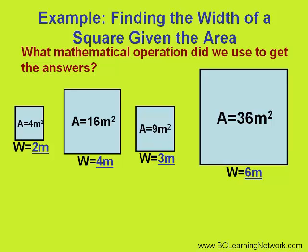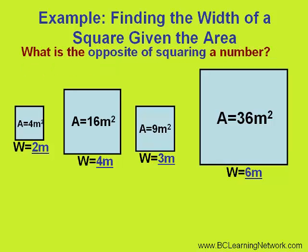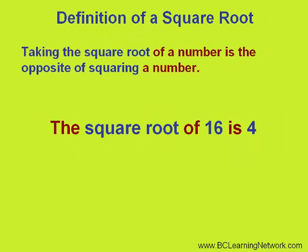What did we do to 16 to come up with the answer of 4? Or, what did we do with 36 to come up with an answer of 6? What is the opposite of squaring a number? It is called taking the square root of a number. The square root of 16 is 4. The square root of 36 is 6.